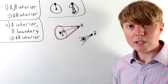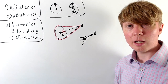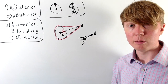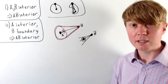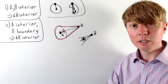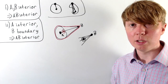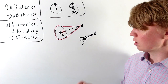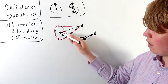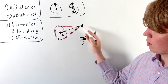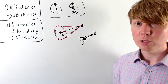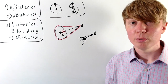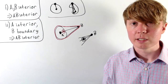So just like in the case where A and B are both interior points, if A is interior and B is a boundary point which belongs to our set, then every single point on the line segment between them is an interior point of our convex set.